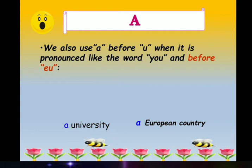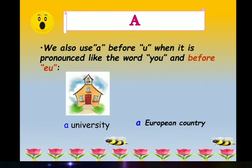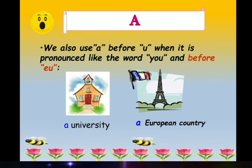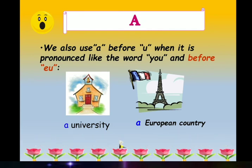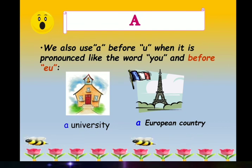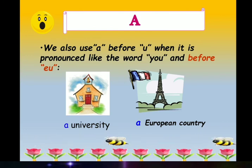We use A article before words where U is pronounced like the word 'you'. You can see the examples: a university, a European country. These words are starting with a vowel letter, but when you pronounce them, we use the Y sound. So because of that, we write article A in front of these words — like a uniform, a unicorn — because when we are pronouncing them, the Y sound is coming.